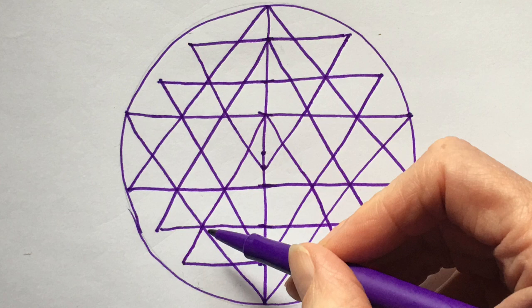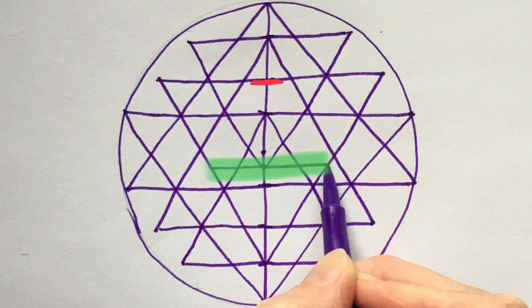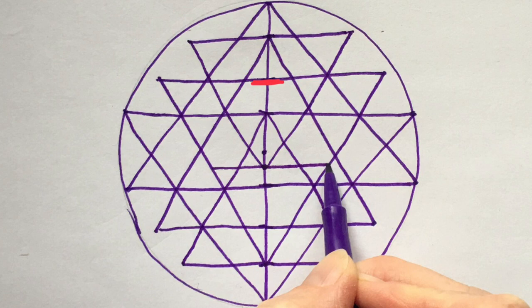Next draw the horizontal line that touches the point of the downward pointing triangle just below the bindu. Draw the sides of the triangle.